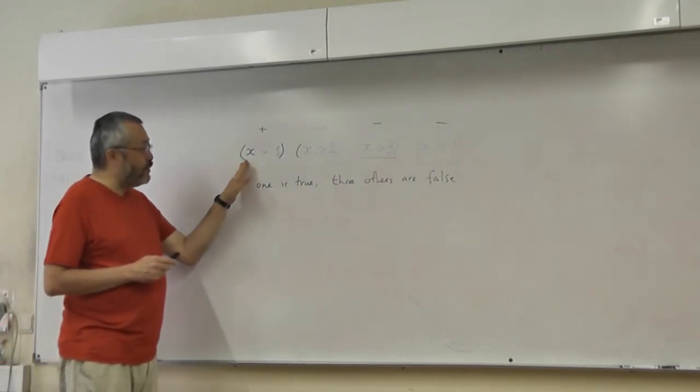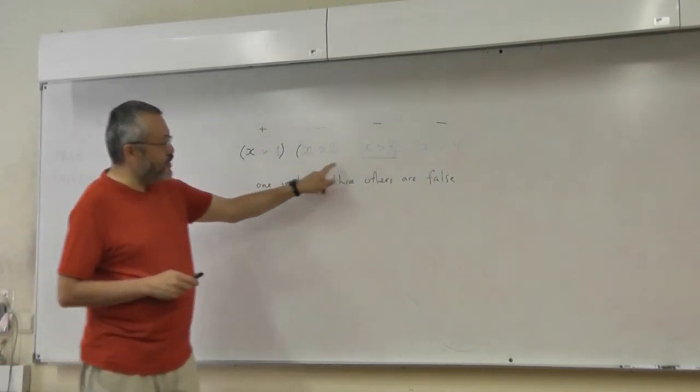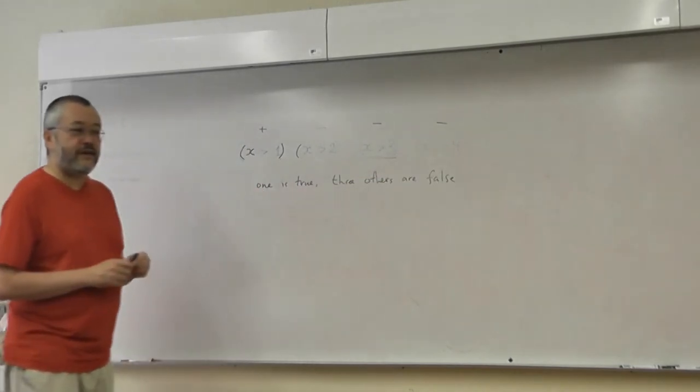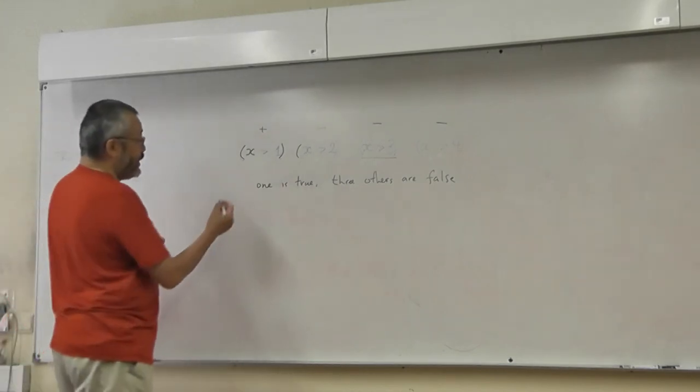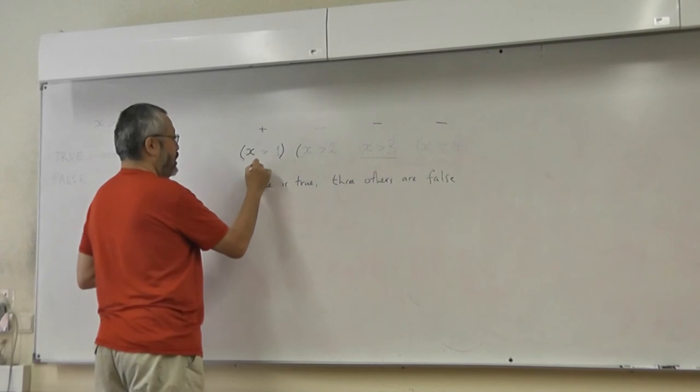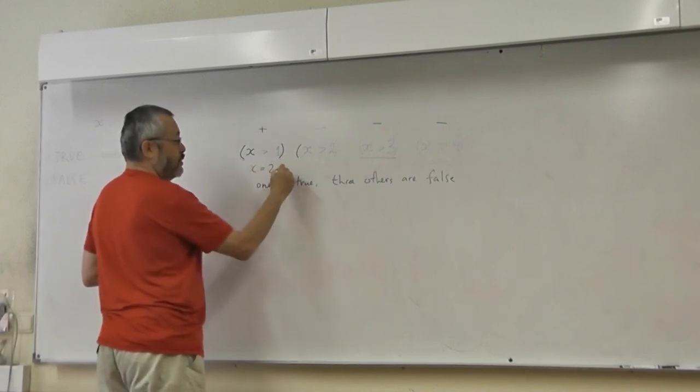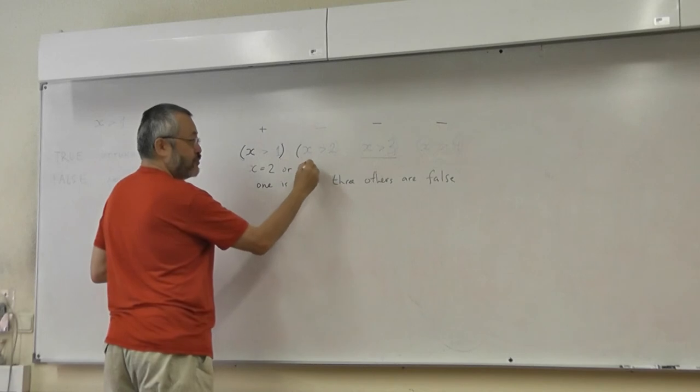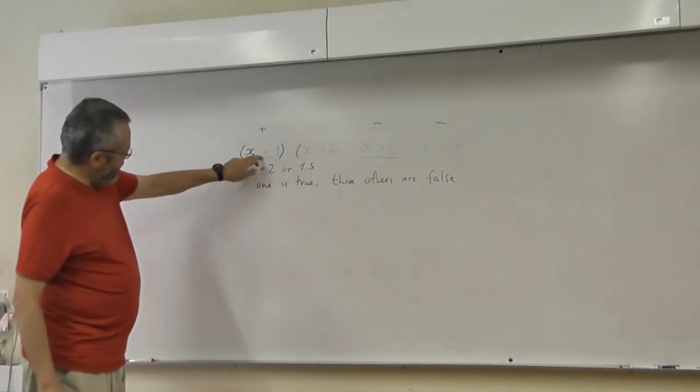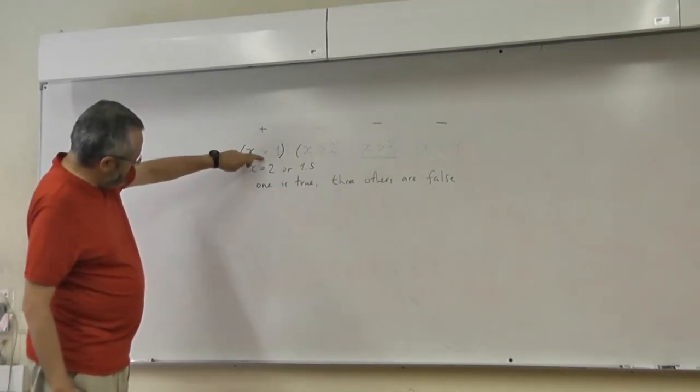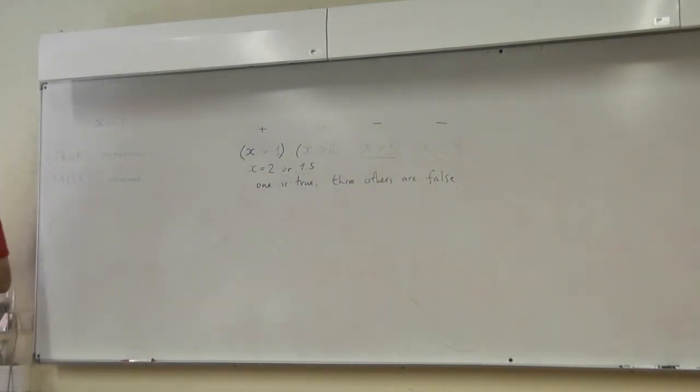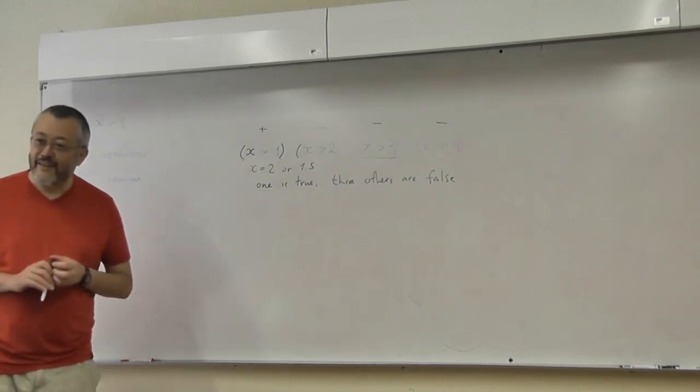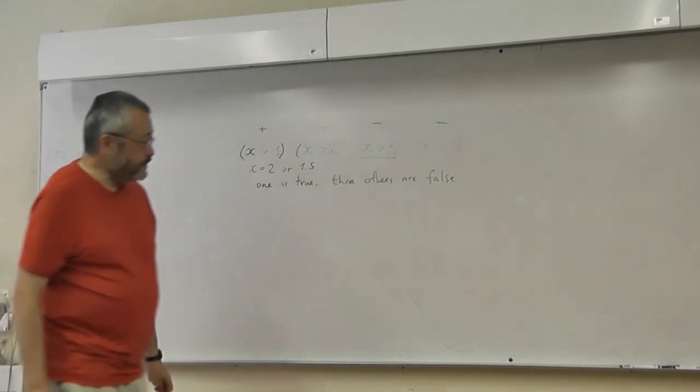So, can we give an example of x when this is true and these are false? x is two. For example, x is two. Or, if you want, 1.5 or so. This is true and all these are false. Okay. So, is it clear? Yes. Okay.